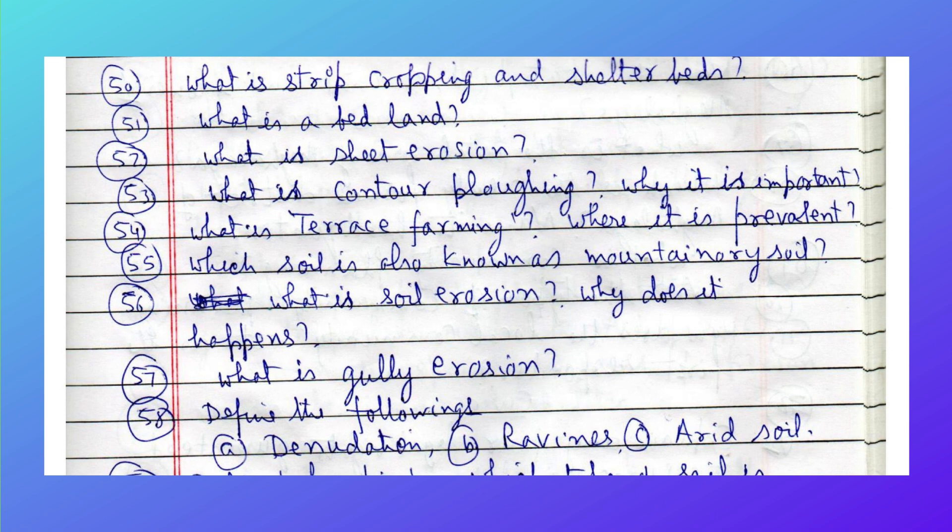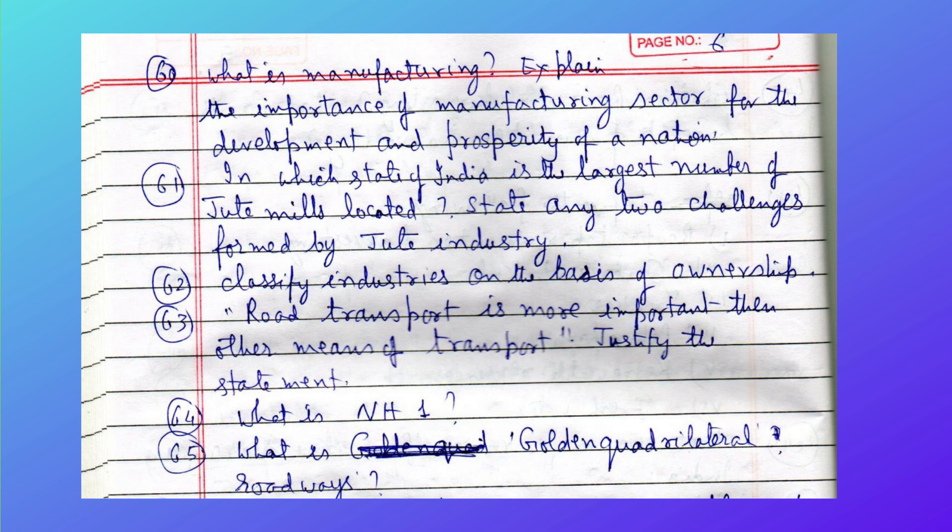Why is soil also known as the mountainous soil? What is soil erosion and why does it happen? What is gully erosion? Define the following: denudation, reverine erosion, and soil. Define leaching. Which type of soil is formed due to leaching? Name two areas having this type of soil.